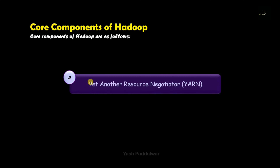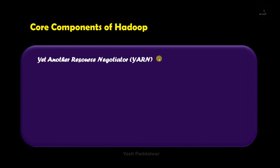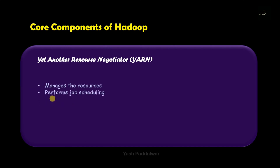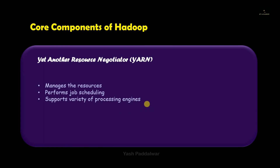First let's have a look at the third component, which is Yet Another Resource Negotiator, also known as YARN. It manages the resources — all the resources required for data to be stored as well as processed are provided by YARN. It also performs job scheduling, deciding which job will be executed by which system. It supports a variety of processing engines — apart from batch processing, YARN supports stream processing, interactive processing, and graph processing, which can be easily stored in HDFS.